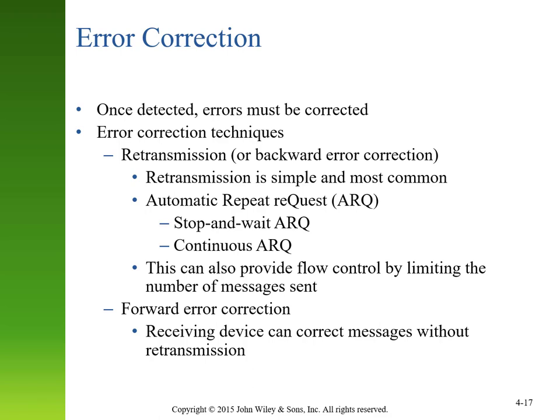Once we've tried to prevent errors and have a detection algorithm in place, we need to decide how to respond when an error occurs. The simplest version is asking for retransmission — like asking someone to repeat themselves when you didn't hear them correctly. Networks use Automatic Repeat Request, or ARQ, which automatically requests information that wasn't properly received. An alternative is forward error correction, where we use an algorithm to fix the message without asking for retransmission — like inferring what someone said without asking them to repeat themselves.